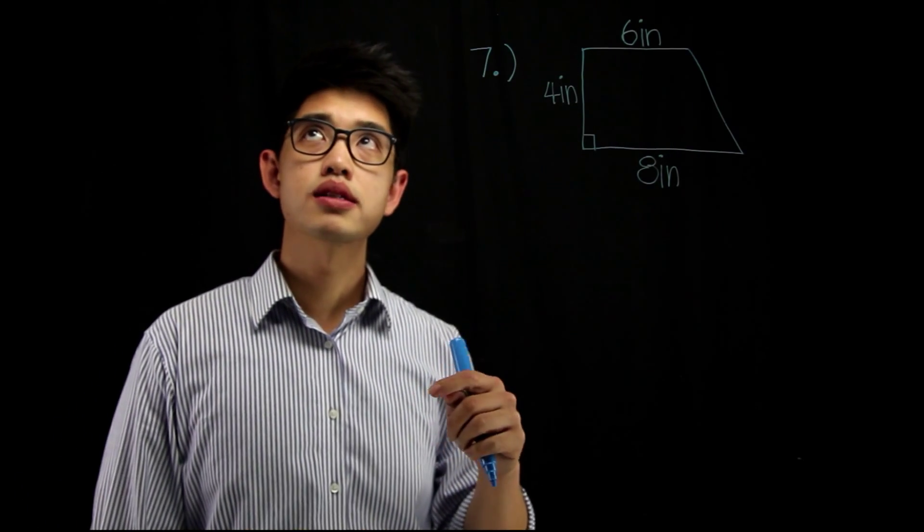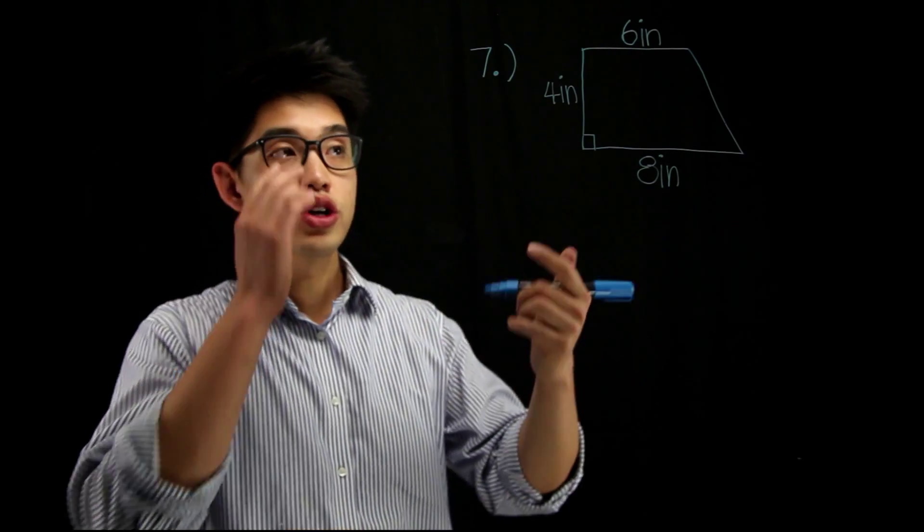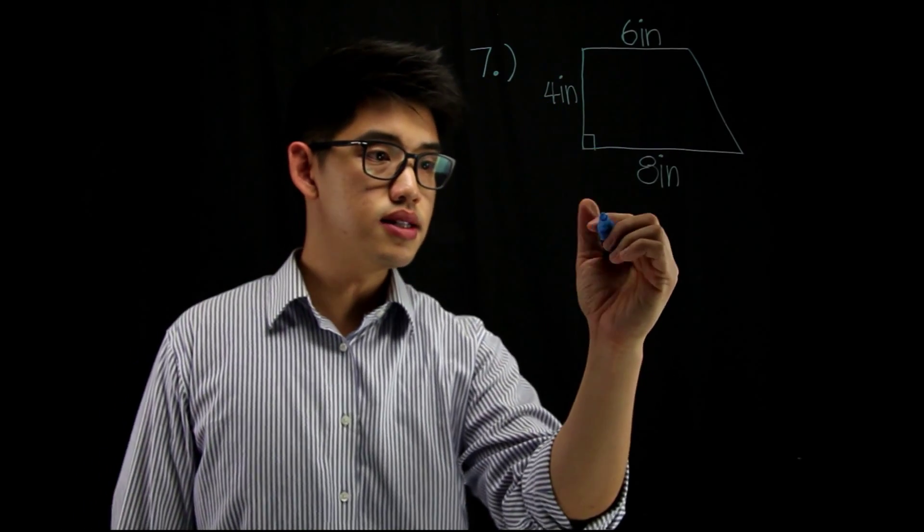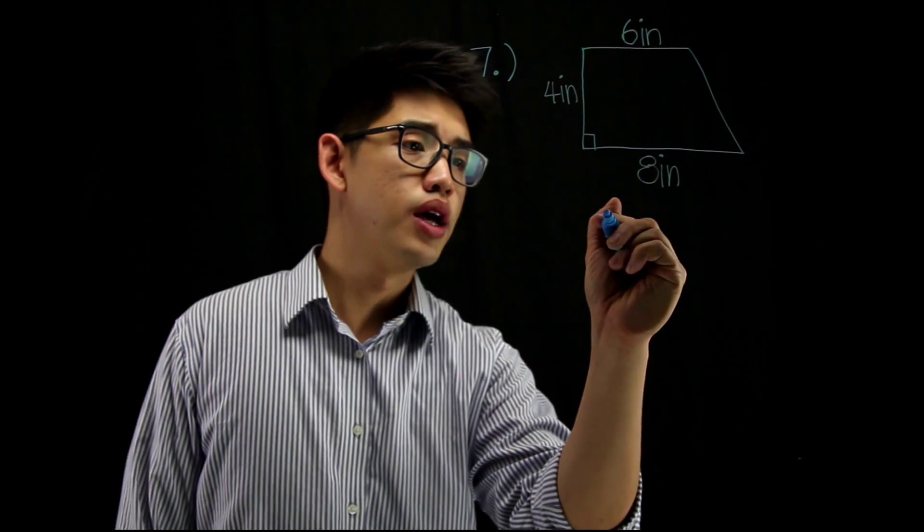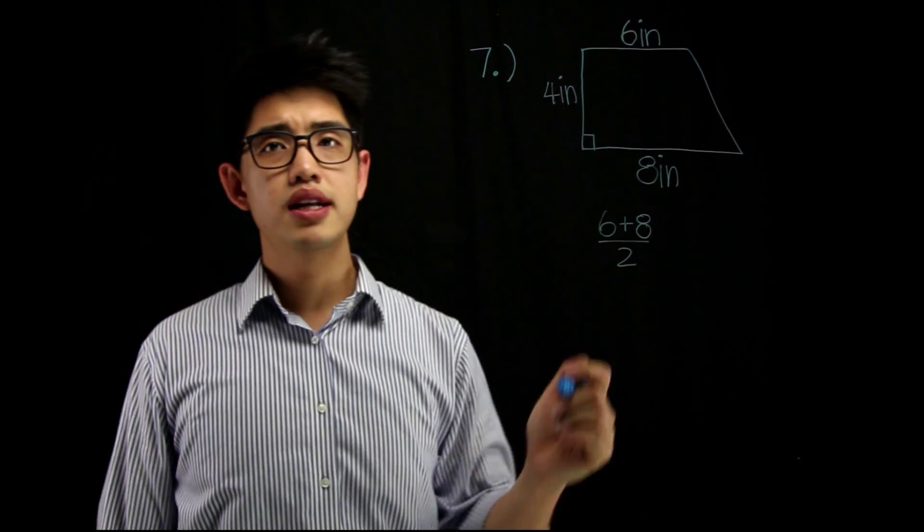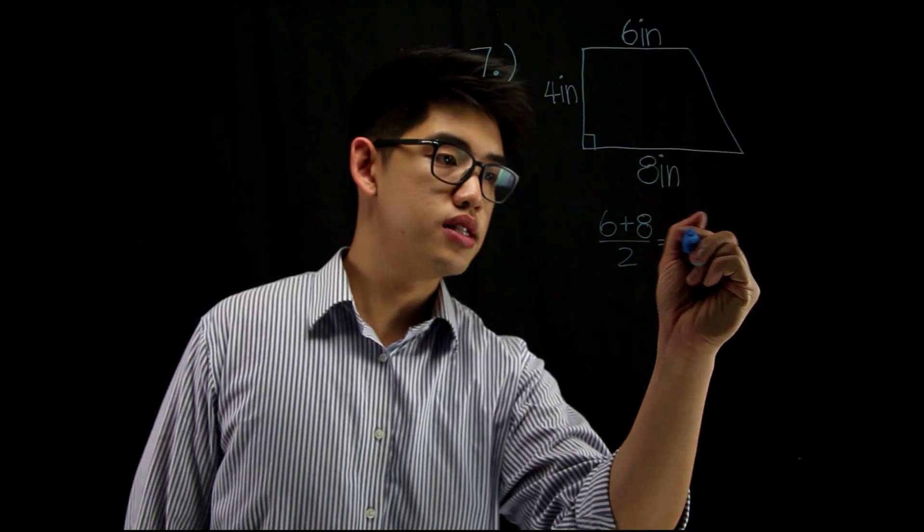Let me see, 6, 8, the number between that is 7. And if you didn't know how I did that, you could have just added the top 2 bases—the base here and the base here, 6 plus 8, and then divide it by 2. 6 plus 8 is gonna be 14, and then divide it by 2, that's gonna be equal to 7.